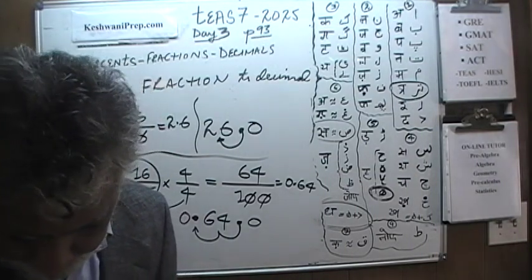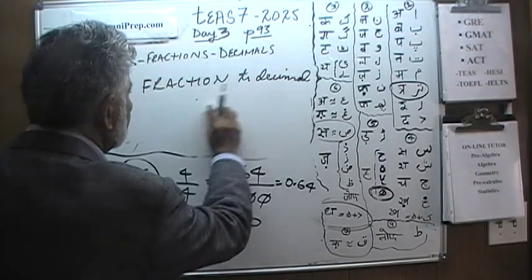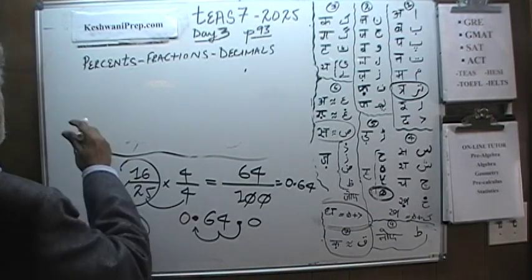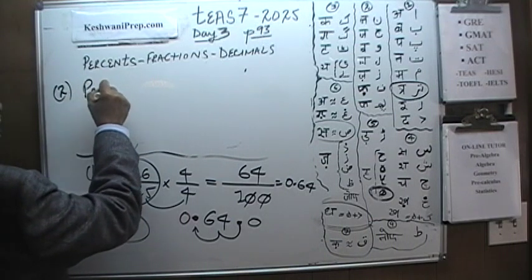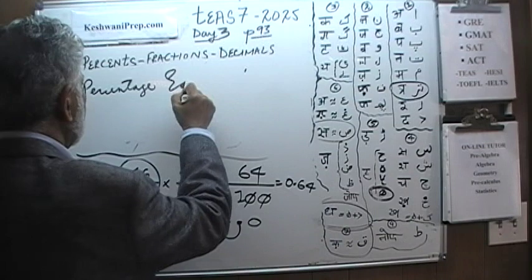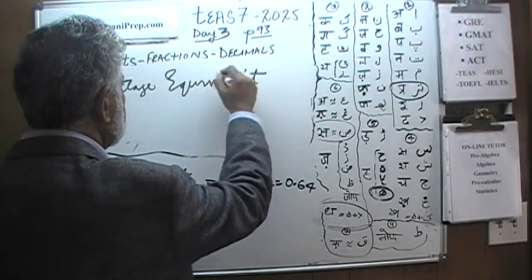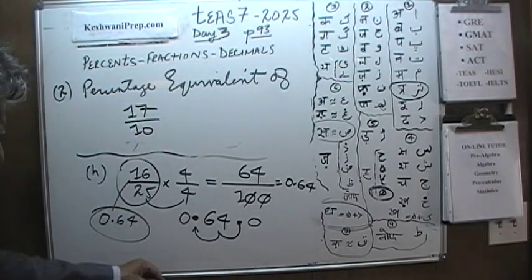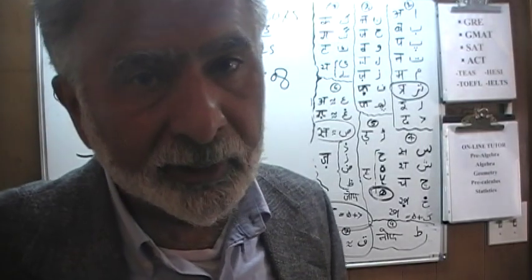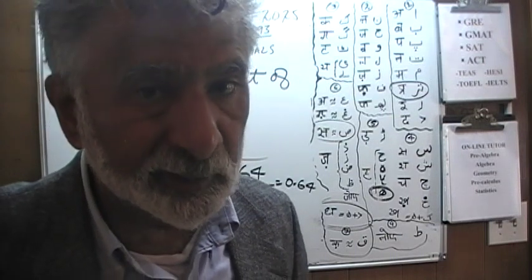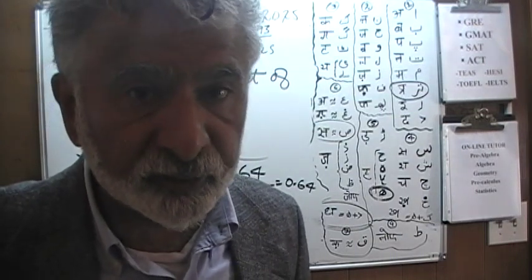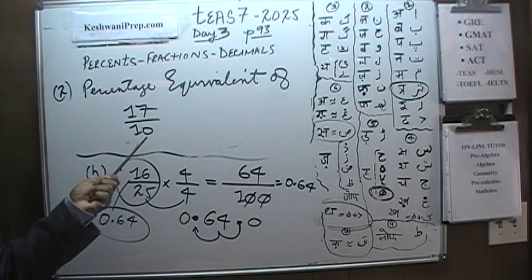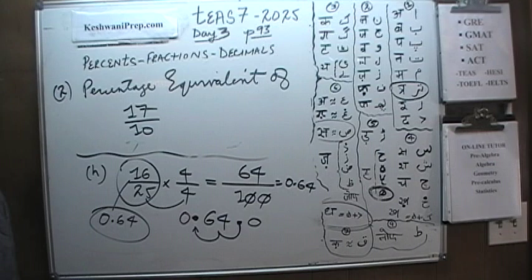That was the end of problem number 1. Let's do problem number 2. Problem number 2 is asking us to find the percentage equivalent of 17 over 10. Now what does the word percent mean? We learned it on day number 2 — percent means out of 100. Can we somehow convert this fraction to have 100 on the bottom? Because if we convert the bottom into 100, then whatever we see on the top is the percentage.